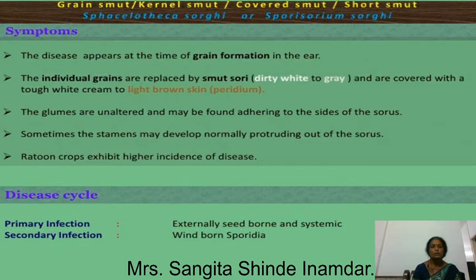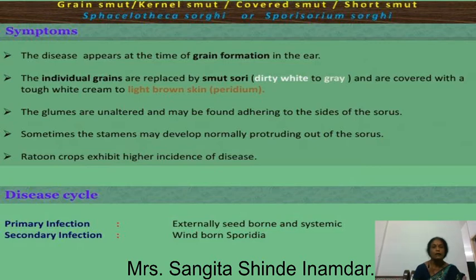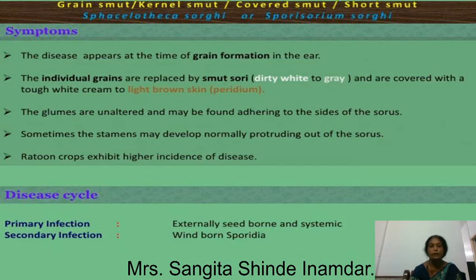These smut spores are very small in size, black to brownish in color. When observed under a microscope, they are circular in outline and very numerous on the slide. Their number is very high, and during dissemination these spores disperse through wind or water current and infect new plants.